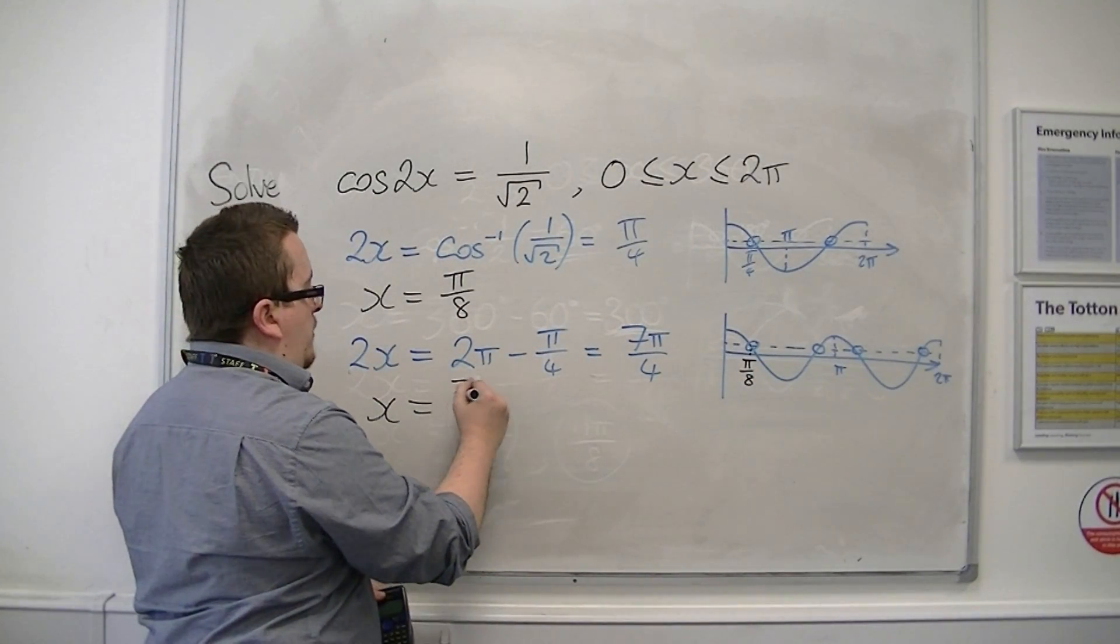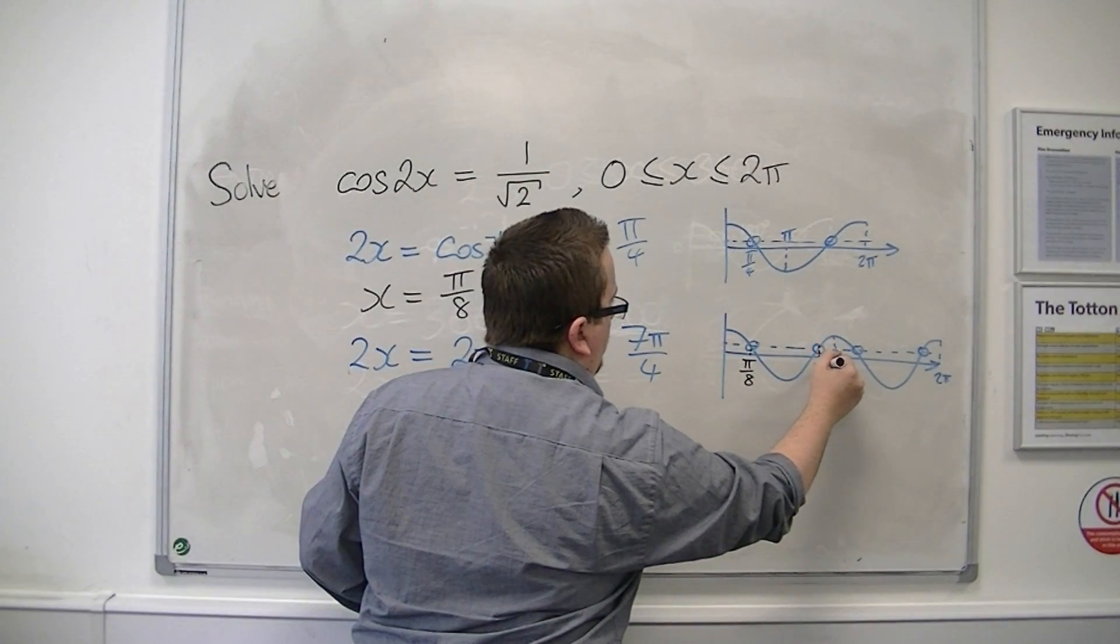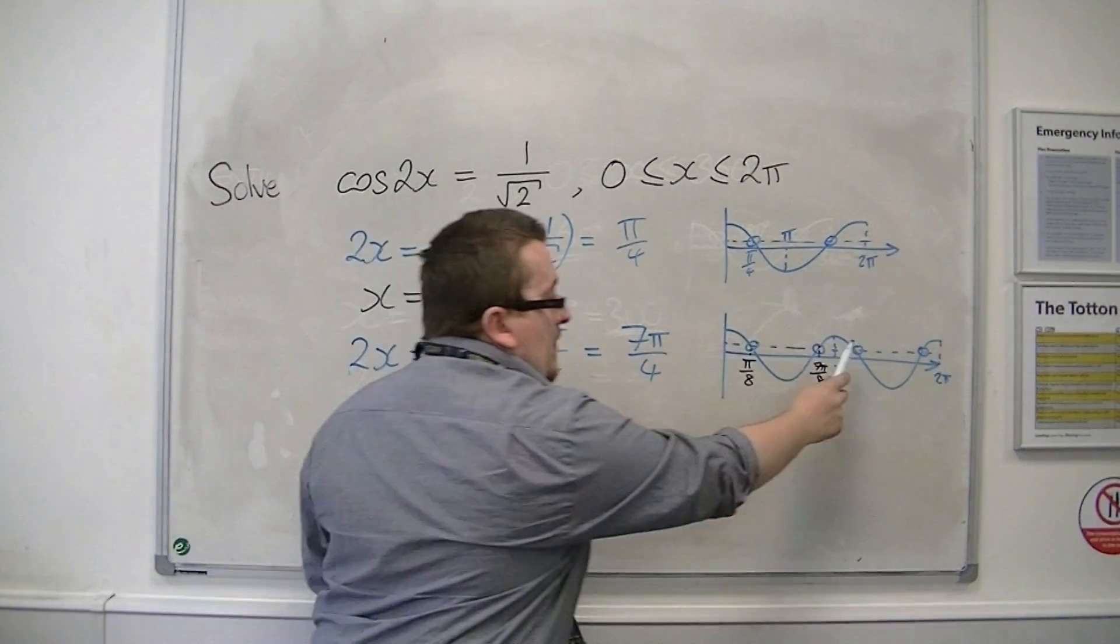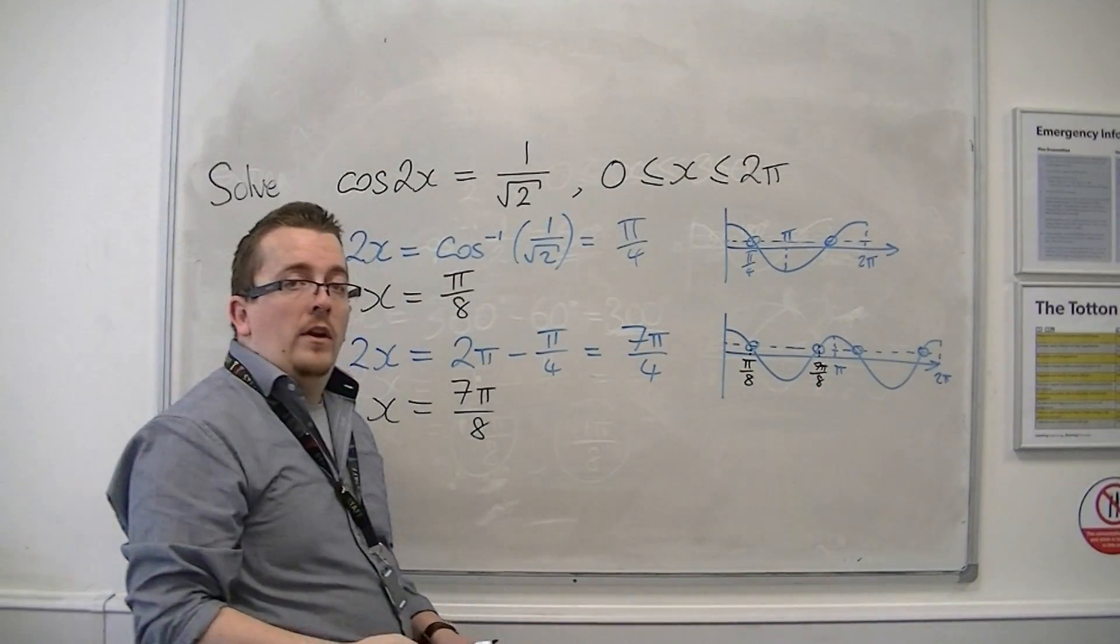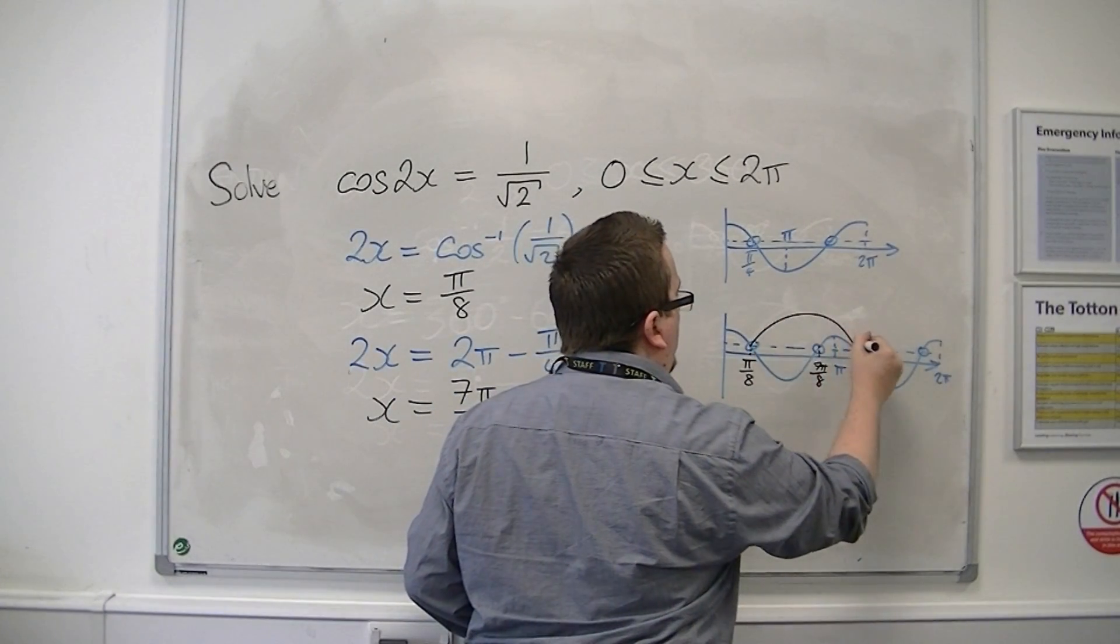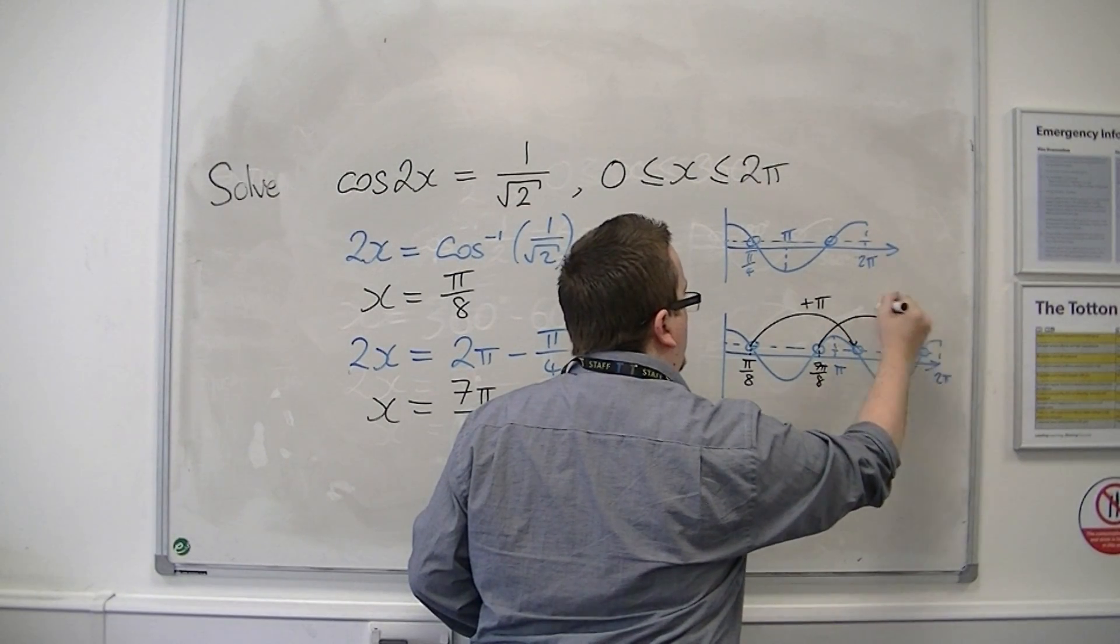so x is equal to pi over 8. That would be that solution there. 2x equals 7pi over 4, so x would be equal to 7pi over 8. So that would be that solution. And so to get the other two solutions, I can do exactly the same as I did before. I can add the period of the curve.